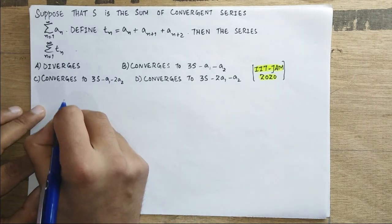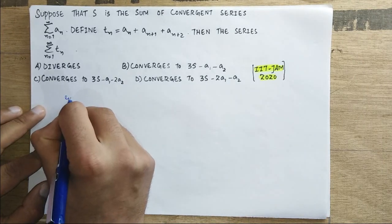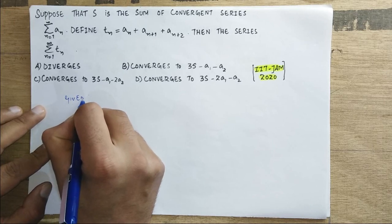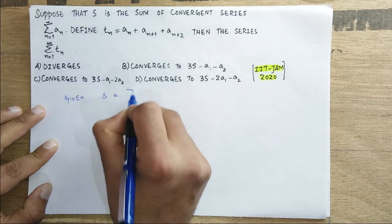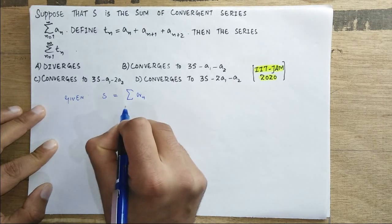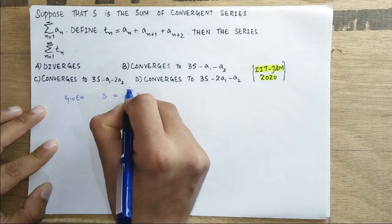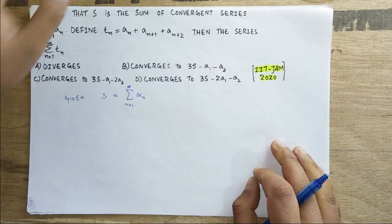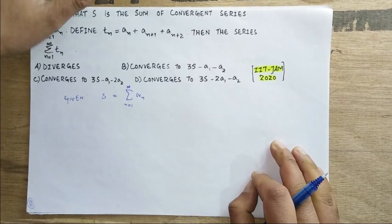First of all, here given is S equals summation a_n, n is from 1 to infinity. So this is the first one.